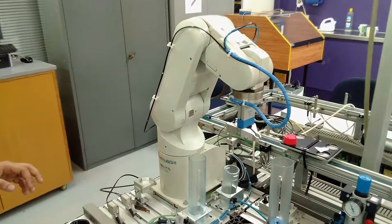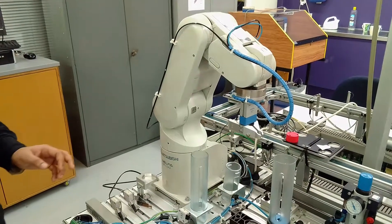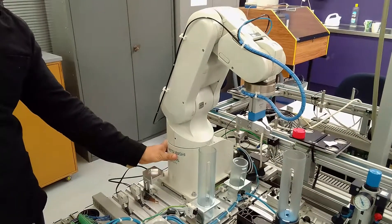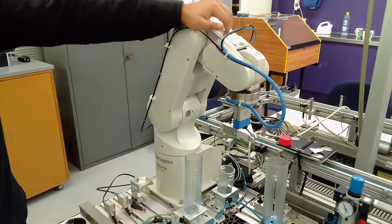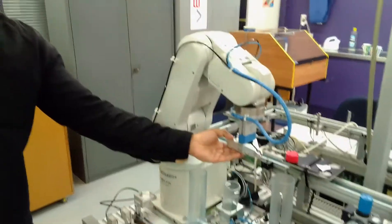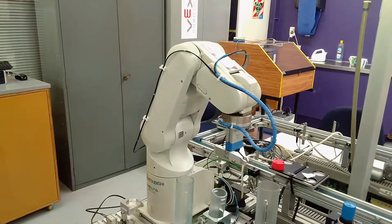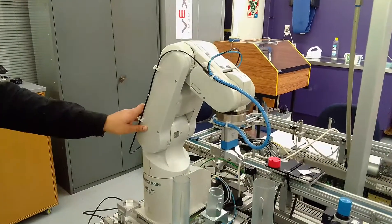I will explain the various parts. This is the base of the robot, this is the shoulder, this is the upper arm, this is the forearm, and this is the end effector. Now I will explain how it is power sourced.